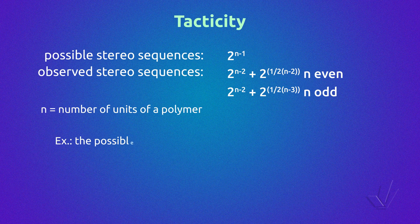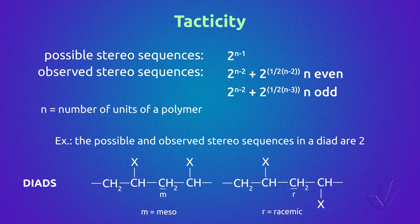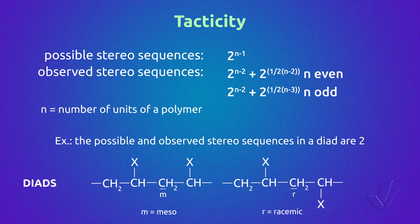Considering a diad where the number of units is 2, there are two possible and observed stereosequences. One is the meso diad, in which the consecutive units have the same configuration, and the other is the racemic diad, in which the consecutive units have the opposite configuration. They are normally called M and R.